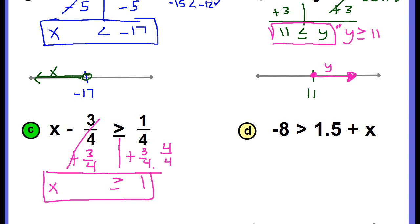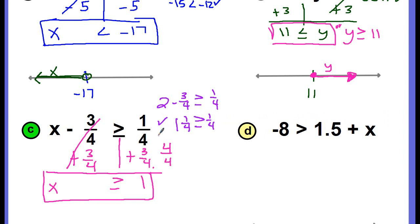Let's check: I'll substitute 2 for x since 2 is greater than 1. Two minus 3 fourths should be greater than or equal to 1 fourth. We know 1 whole is 4 over 4, so 2 minus 3 fourths equals 1 and 1 fourth. Is 1 and 1 fourth greater than or equal to 1 fourth? Yes, it's a true statement. Now I graph the solution: the number 1 on the number line with a solid filled-in circle because of the equal sign, and the arrow goes to the right since x is greater than 1.